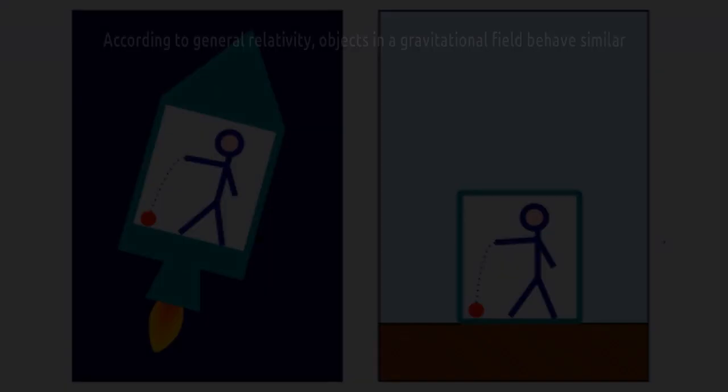Hilbert and his assistant Emmy Noether corresponded extensively with Albert Einstein on the formulation of the theory.